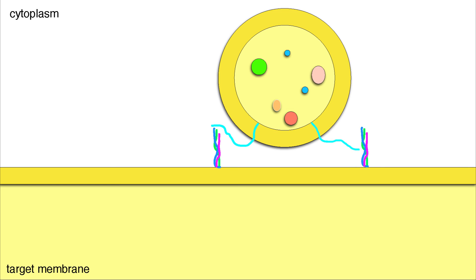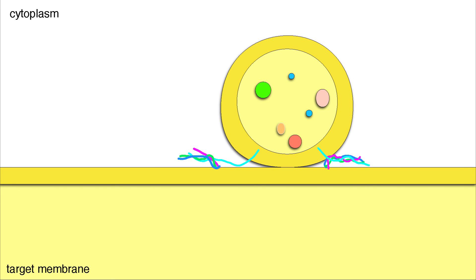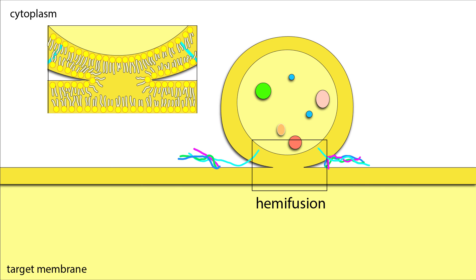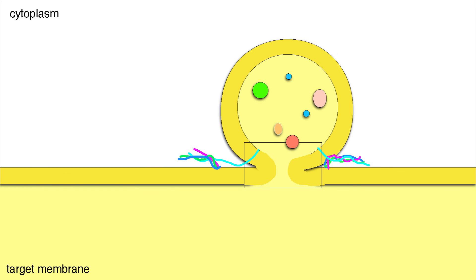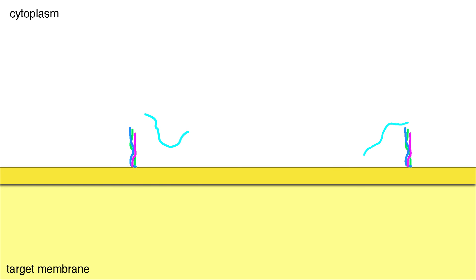Once the vesicle is docked, snare proteins in both the vesicle and target membranes coil together, releasing energy and bringing the polar heads of the two membranes closer. In a rate-limiting step, the hydrophilic layers merge together, forming a hemi-fused membrane that is quickly resolved to a fully-fused membrane. Snare complexes are then unwound, and RAB proteins released so the process can be repeated.